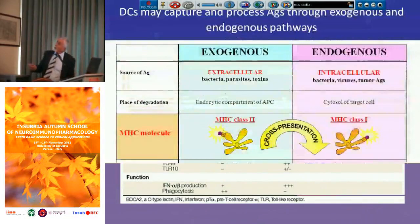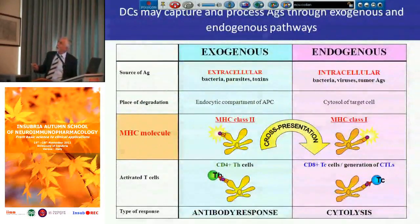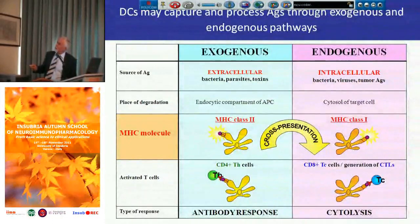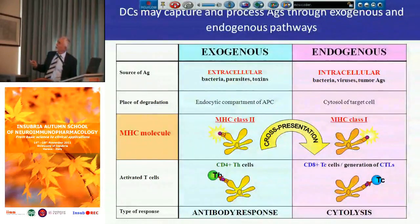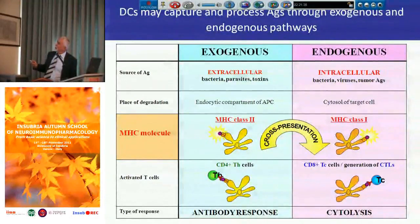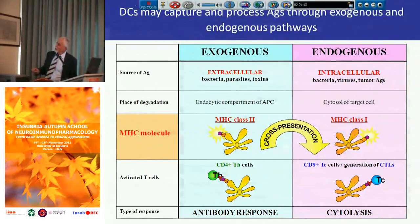Dendritic cells may capture extracellular bacteria, parasites, and toxins, and degrade them in the endocytic compartment, then present the elaborated antigens in association with MHC class II antigen. When a cell is infected with intracellular pathogens — bacterial viruses especially — or tumor antigens, the dendritic cells may phagocytose the entire cell, elaborate the antigens, and present them in association with MHC class I. One pathway activates CD4 TH cells and possibly antibody responses; the other produces a cytotoxic response.